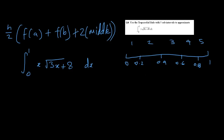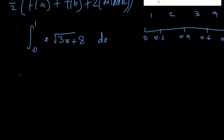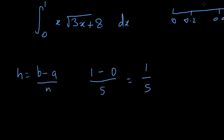We need to use F(A), F(B), and 2 times the middle. We don't even need a table. All we have to do is use the formula again: H over 2. Remember H equals B minus A over N. Our number of sub-intervals is 5, so H equals 1 minus 0 over 5, which is just 1 over 5 or 0.2. That confirms the spacing we already found.